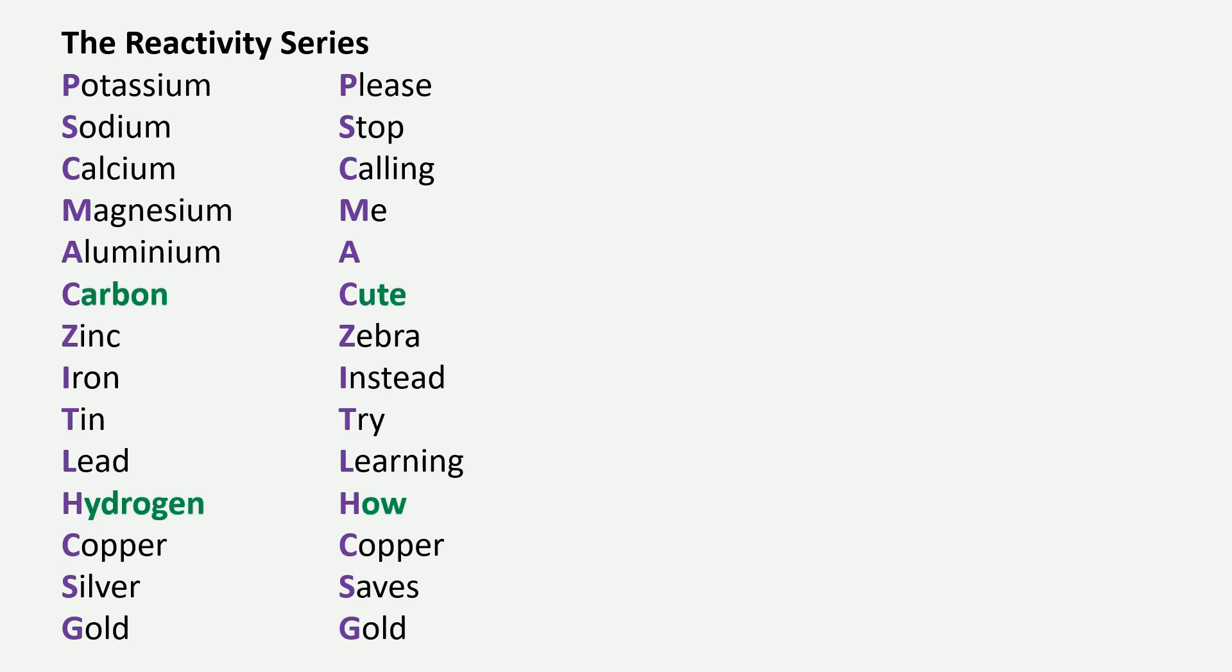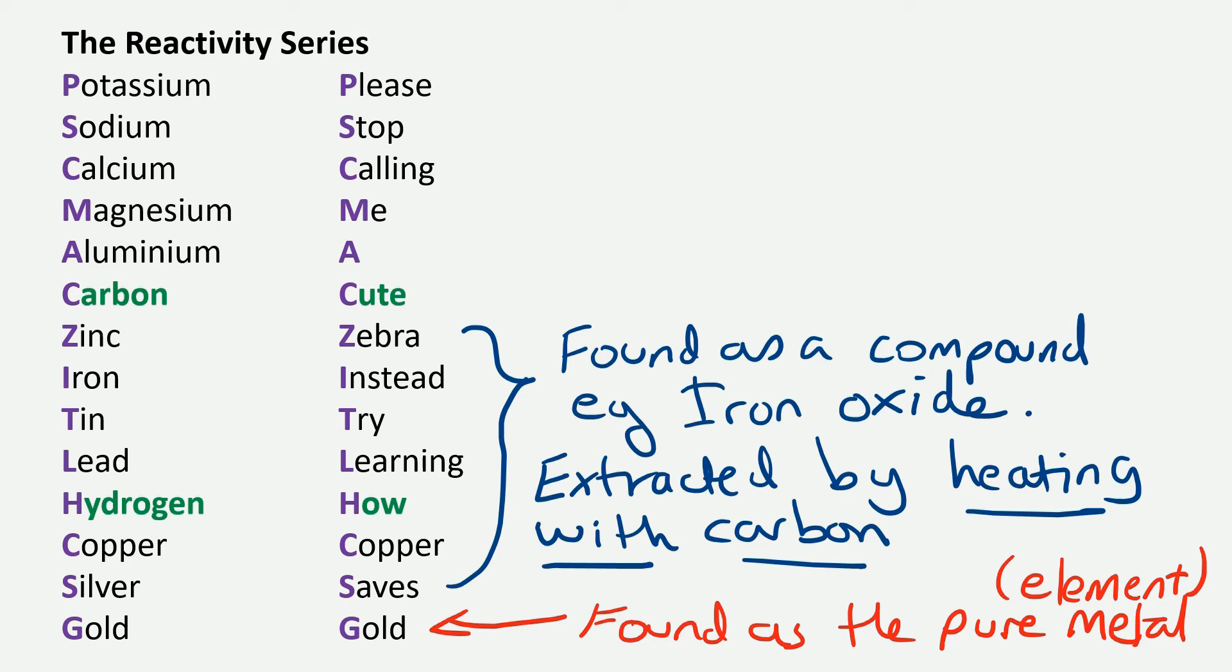So to summarise what we know about extracting metals. Metals down at the bottom of the reactivity series just sit in the rock as the pure elements so we don't need to take anything away from those. Higher up the reactivity series the ones below carbon are found as a compound. For example iron is found as iron oxide and that can be extracted by heating it with carbon. When the carbon takes away the oxygen we call that a reduction reaction.